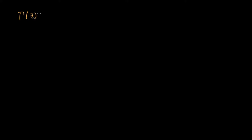In this video I want to derive the Legendre duplication formula. The Legendre duplication formula says that gamma of z times gamma of z plus one half is equal to two to the one minus two z times root pi times gamma of two z. This is a nice way of relating a product of gamma functions to a single gamma function — here gamma of two z, hence 'duplication.'